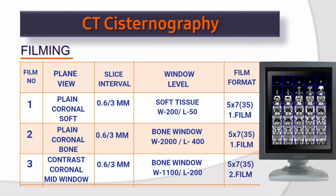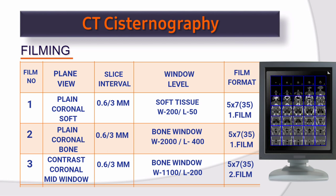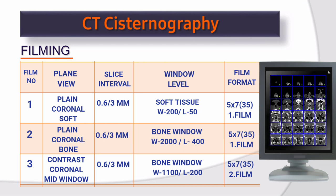Filming. Film 1 — plain view, plain coronal soft. Slice interval: 0.6×3 mm. Window level: soft tissue — window width 200, window level 50. Film format: 5×7, 35 images, 1 film. Film 2 — plain view, plain coronal bone. Slice interval: 0.6×3 mm. Window level: bone window — window width 2000, window level 400. Film format: 5×7, 35 images, 1 film. Film 3 — plain view, contrast coronal mid window. Slice interval: 0.6×3 mm. Window level: bone window — window width 1100, window level 200. Film format: 5×7, 35 images, 2 films.